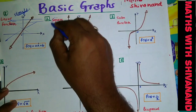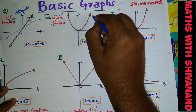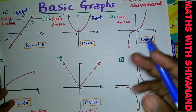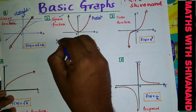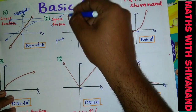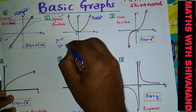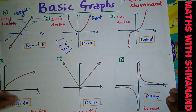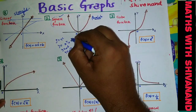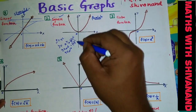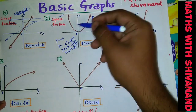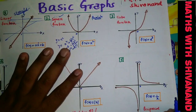The second kind of function, which is very important, is the square function. A square function is always of the parabolic type. Many students remember only the curve of y = x². But if I say y = x⁴, y = x⁶, or y = x¹⁰, they find it difficult to draw. Remember: x⁴ can be written as (x²)², and all such even-power curves are square functions.